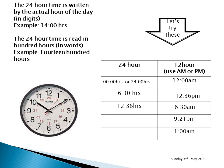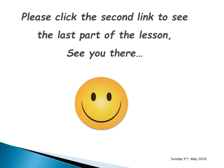For 9:21 PM — still in the second 12 hours — the 24-hour clock adds 9 hours 21 minutes to the first 12 hours: 9 plus 12 equals 21, so the 24-hour clock reads 2121 hours. For 1 AM — the first hour of the day — the 24-hour clock reads 0100 hours. I hope you now understand 12 and 24-hour time better. Students, please click on the second link to see the concluding part of the lesson.